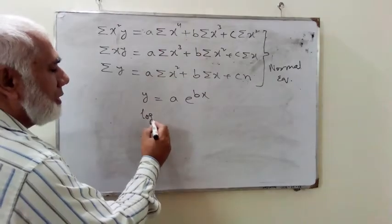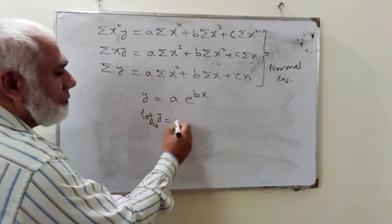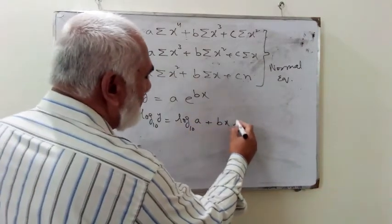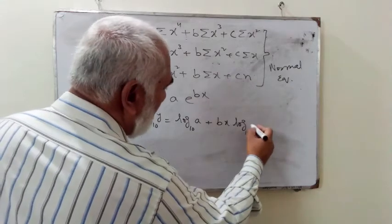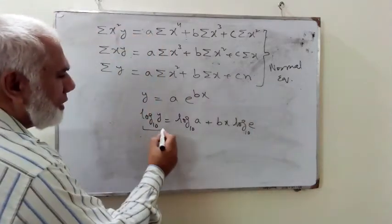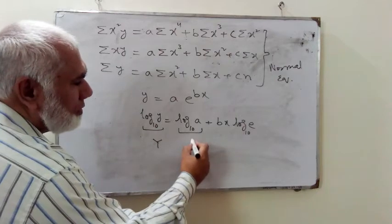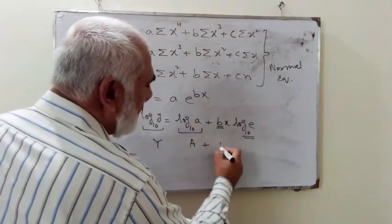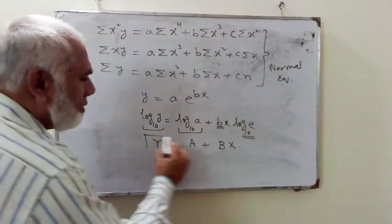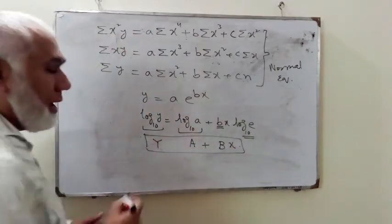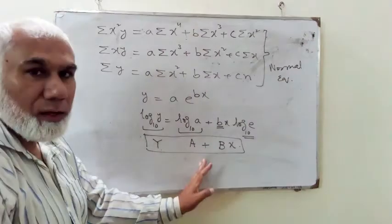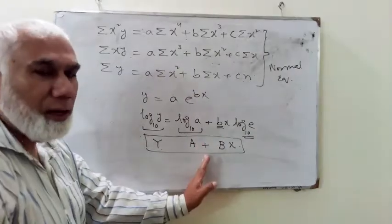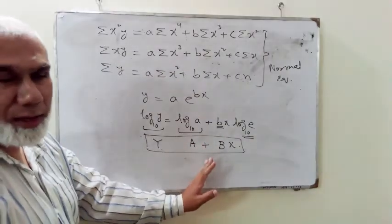The principle will be the same, or the procedure will be the same. You have already learned we can transform it into the linear form if we take the log on both sides. So we can transform it very easily into the linear form by writing log base e—this quantity gives you capital Y, this is your capital A, and this constant gives you—this is your linear equation.